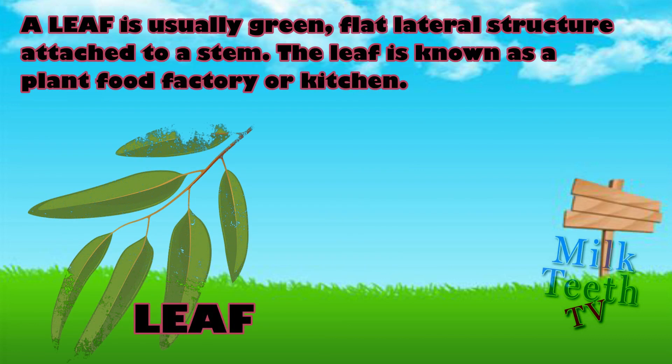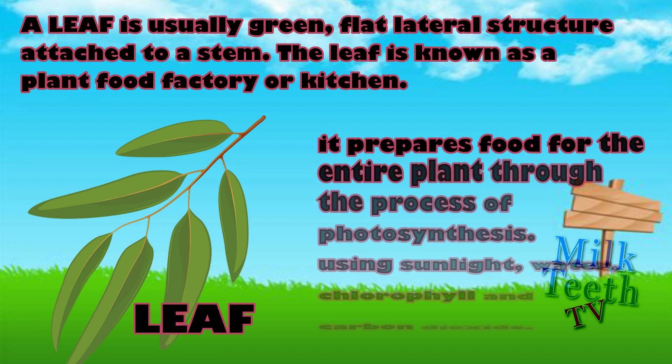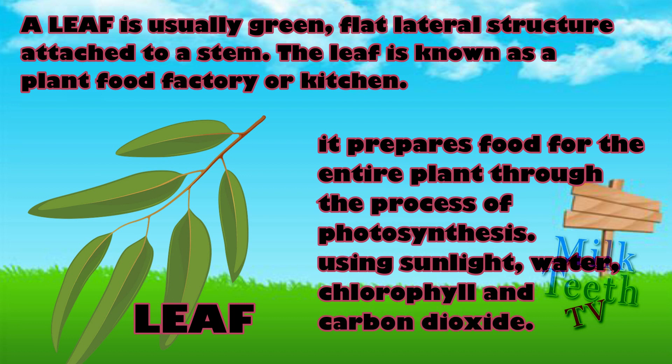A leaf is usually a green, flat, lateral structure attached to a stem. The leaf is known as the plant's food factory or kitchen. It prepares food for the entire plant through the process of photosynthesis using sunlight, water, chlorophyll and carbon dioxide.